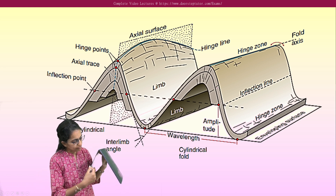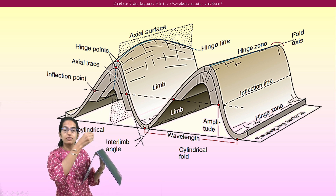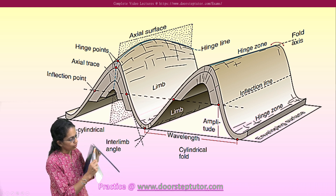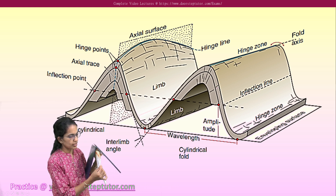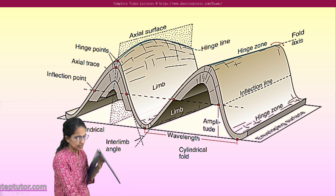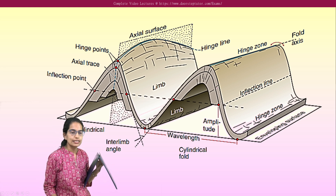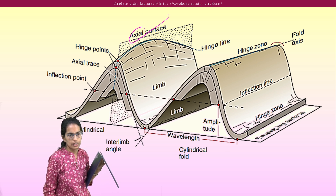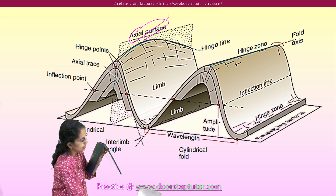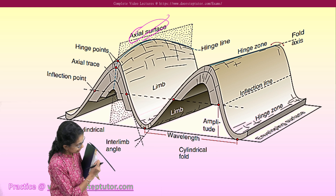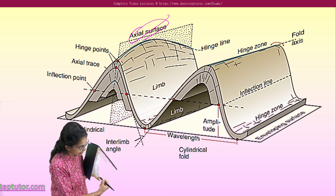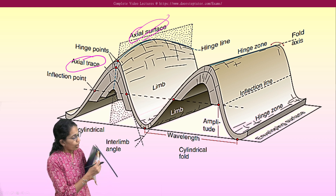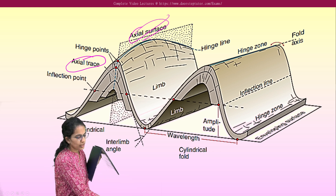Once you have the fold, there is an imaginary line cutting across the center of the fold. This imaginary line is called the axial plane or axial surface. When we mark the axial surface on the diagram, there is one line of the axial surface that is visible — this line is called the axial trace.